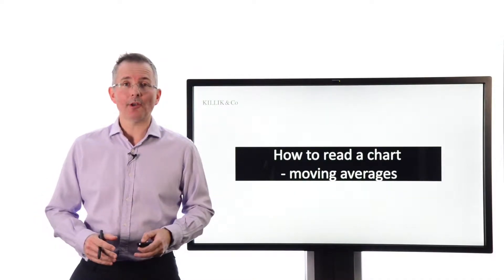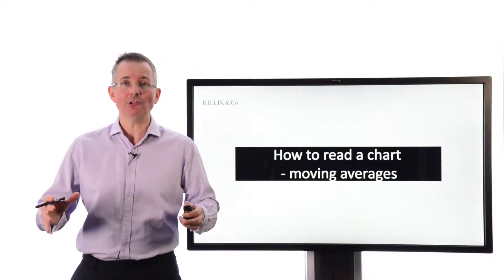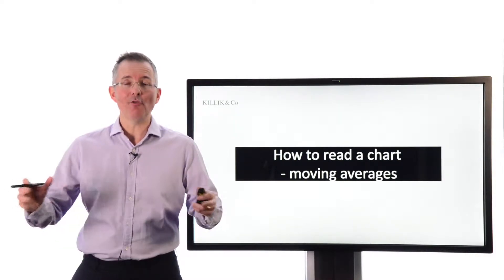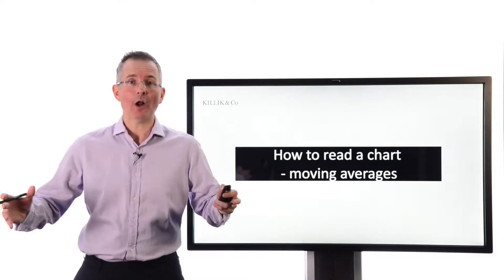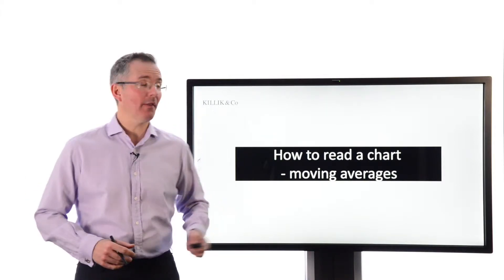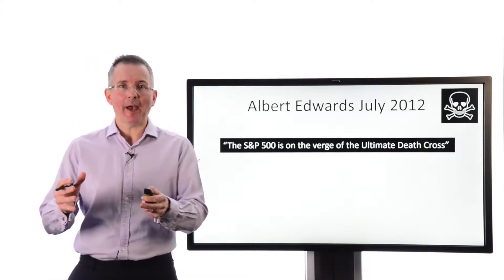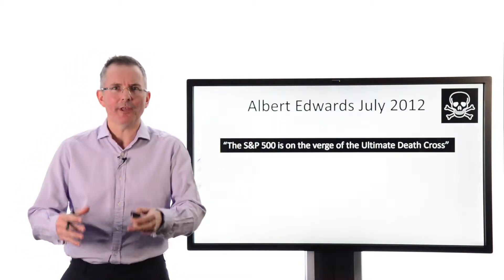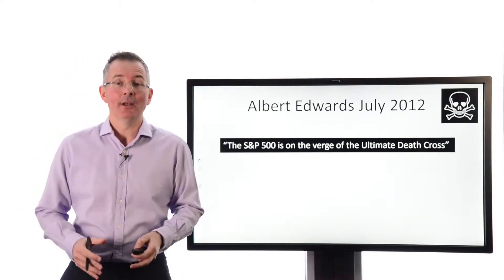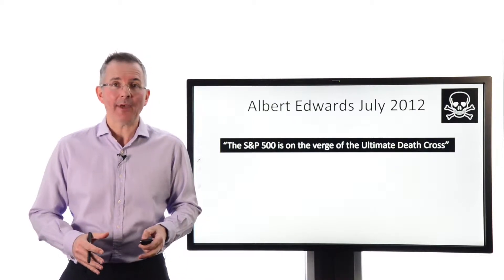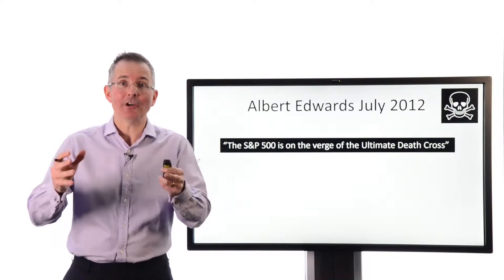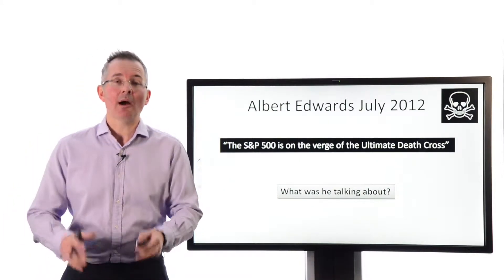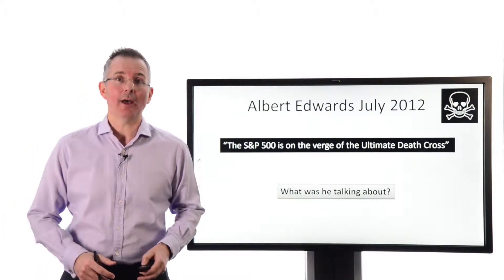In this short video, I want to take on an important aspect of reading charts, otherwise known grandly as technical analysis, and that's the moving average. So why do we have them and how useful are they? Well, Albert Edwards, well-known analyst, once said the S&P 500 is on the verge of the ultimate death cross. Now that is a reference to something produced by a moving average. It's a pretty dramatic statement. What does it mean? And I'll come back to death crosses a bit later on.